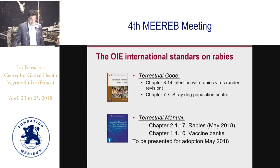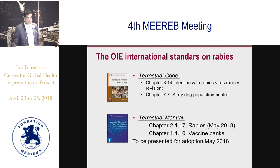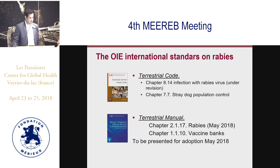For diagnosis, chapter 2.7 is related to rabies diagnostics. This chapter has been extensively amended over two years and will be presented for adoption at the next general session — so we may have a new international standard after May 2018. I also want to mention chapter 1.1, related to vaccine banks, which is important for ensuring high-quality vaccines are always available, with clear international standards on how a vaccine bank should be set up.